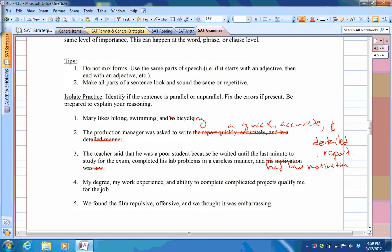Number four, my degree, my work experience, and ability. I would probably write like that: my degree, my work experience, and my ability. And then finally for number five, we found the film repulsive, offensive, and embarrassing. Saying we thought it was, that just loses the parallel structure. So you want everything sounding the same way.